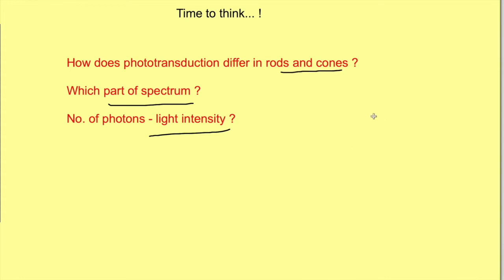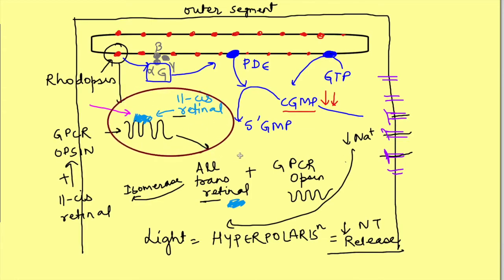Now, see rods and cones have different forms of opsin. The binding of retinal to different forms of opsin actually tunes this retinal molecule to a particular region of the spectrum. Tuning means just by the virtue of binding to different forms of opsin, they respond to photons from different wavelengths of the spectrum.